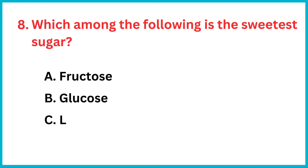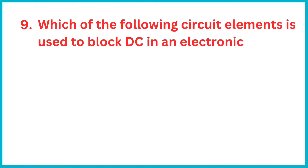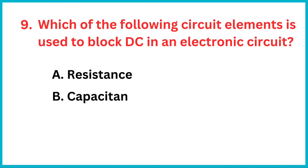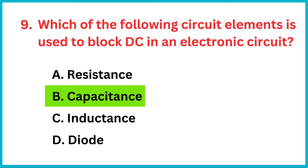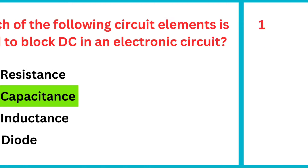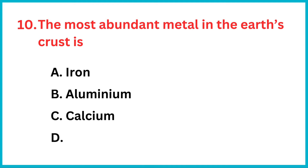Which among the following is the sweetest sugar? The correct answer is option A: fructose. Which of the following circuit elements is used to block DC in an electronic circuit? The correct answer is option B: capacitance.